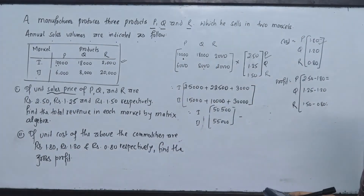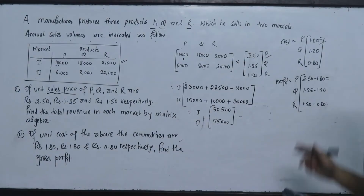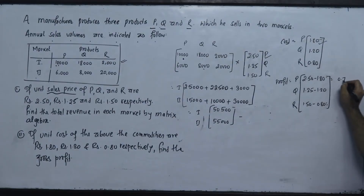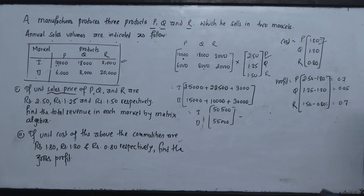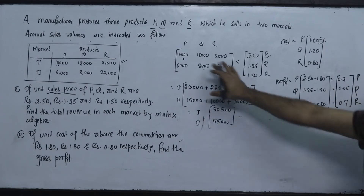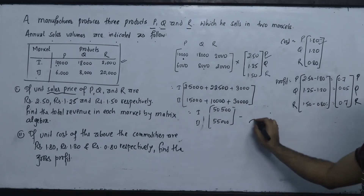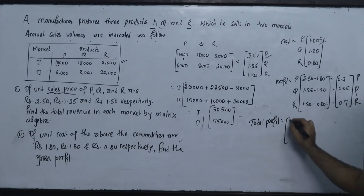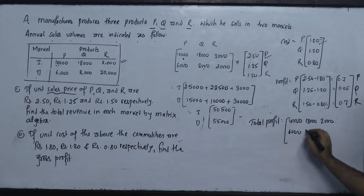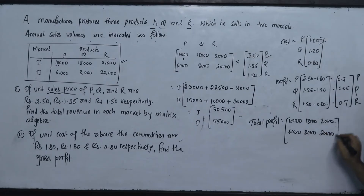What is the price? We have to write 2.50 minus 1.80 equals 0.70 rupees for P. For Q: 1.25 minus 1.20 equals 0.05 rupees. For R: 1.50 minus 0.80 equals 0.70 rupees. This is the profit per unit for P, Q, R. We have to multiply this profit per unit by the sales volume.